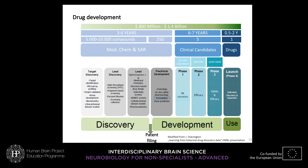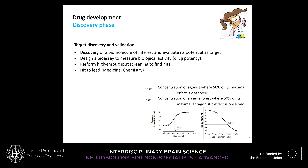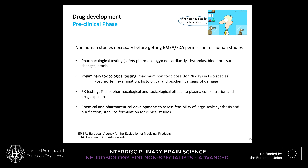In the discovery phase, target discovery and validation is critical — one must identify a protein or receptor that can be affected in the disease and evaluate its potential as a target. One must design bioassays to measure biological activity, perform high-throughput or medium-sized screening to find hits, and once hits are found, proceed to lead development by medicinal chemistry. The pharmacodynamic parameters we have already seen are important for characterizing the first hits.